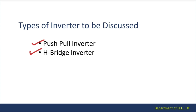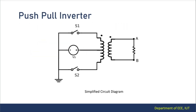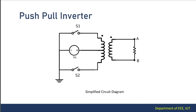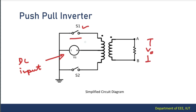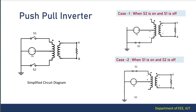First of all, let's dive into the push-pull inverter and see its basic theory — how push-pull inverters give us the alternating output while we use a DC input. This is the basic circuit diagram of a push-pull inverter. From the circuit we can see there is a DC input source and we will be extracting our output from the AB terminal. We have two switches, S1 and S2, and a transformer.